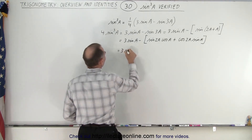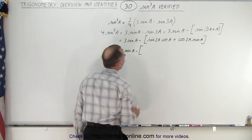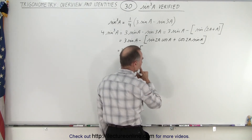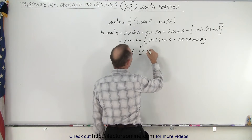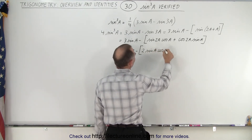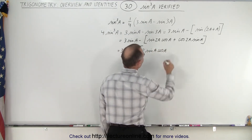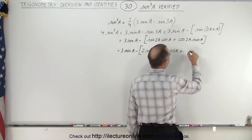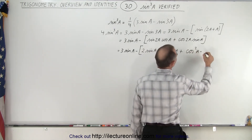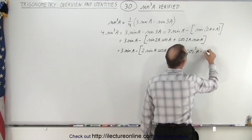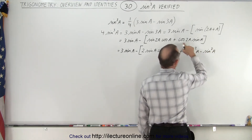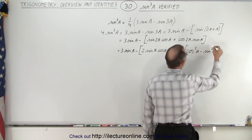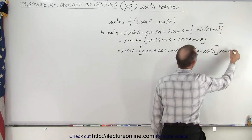So this is equal to 3 times the sine of A minus: the sine of 2A can be written as 2 times sinA cosA, multiplied by cosA; plus cosine of 2A, which is cosine squared of A minus sine squared of A, multiplied by the sine of A.